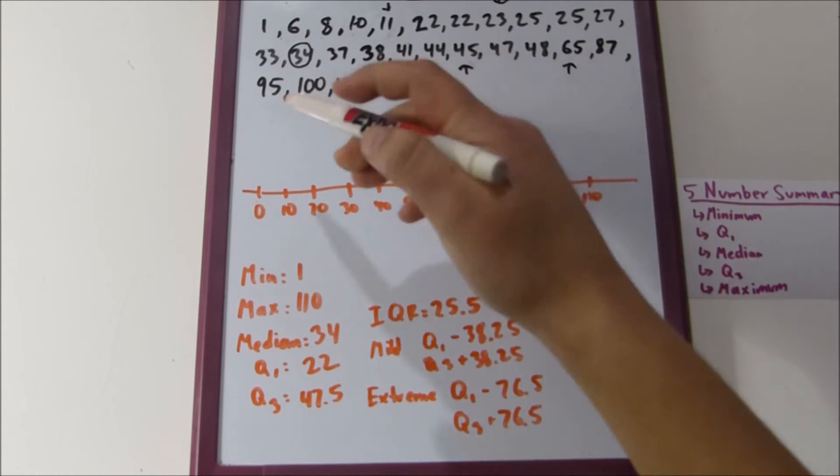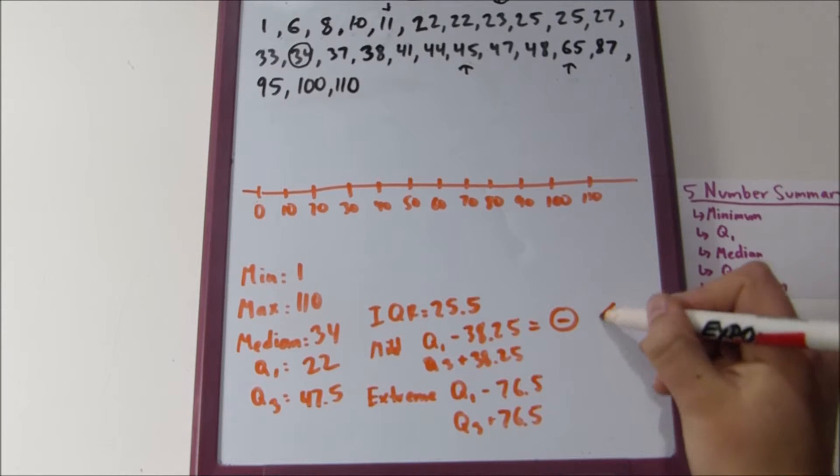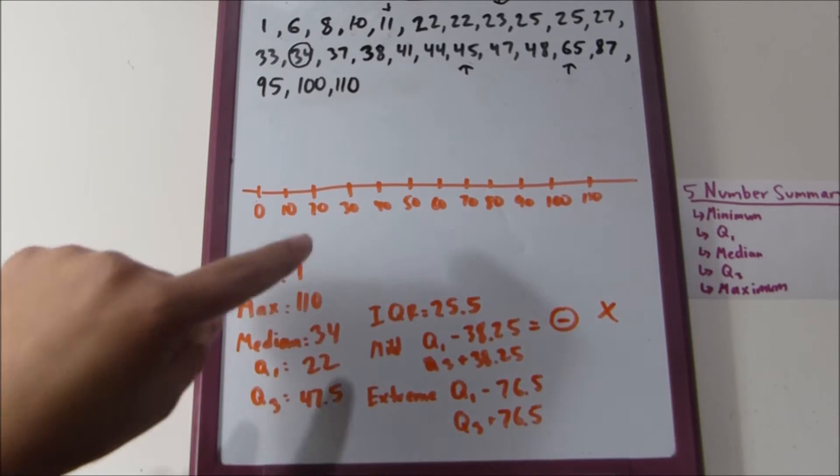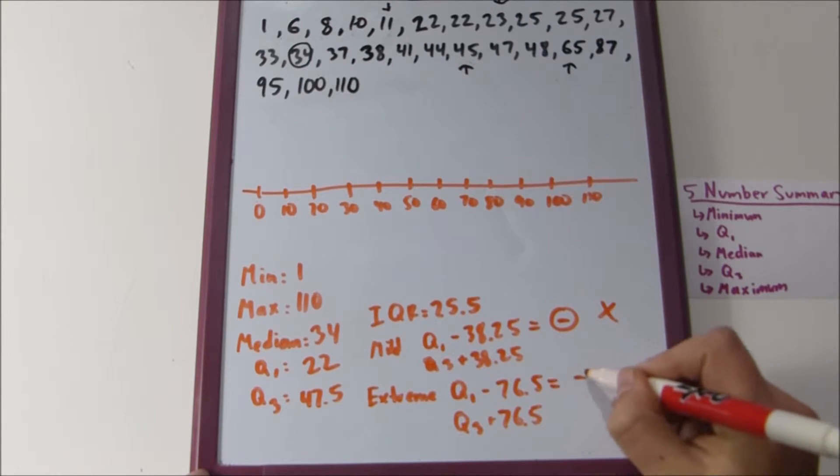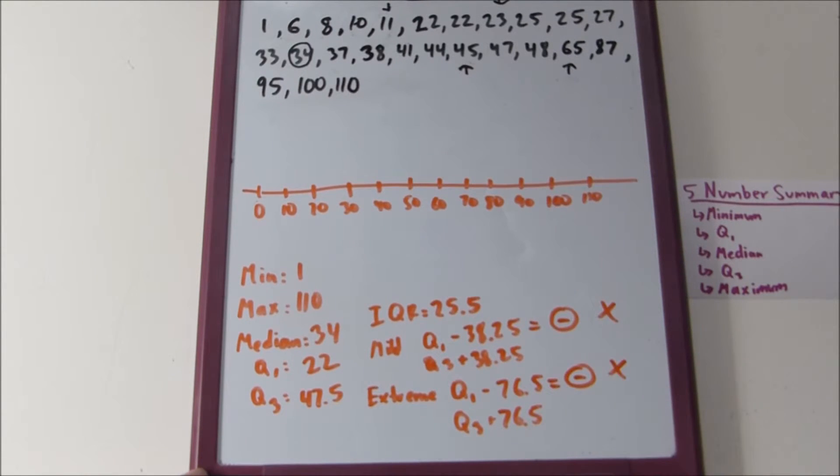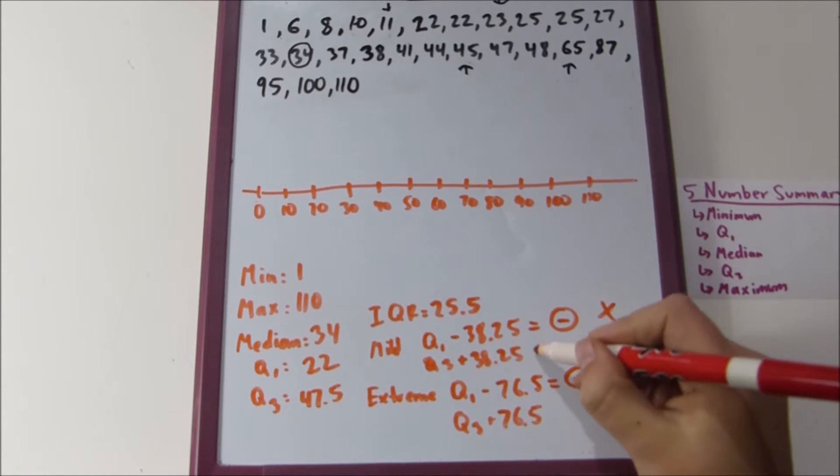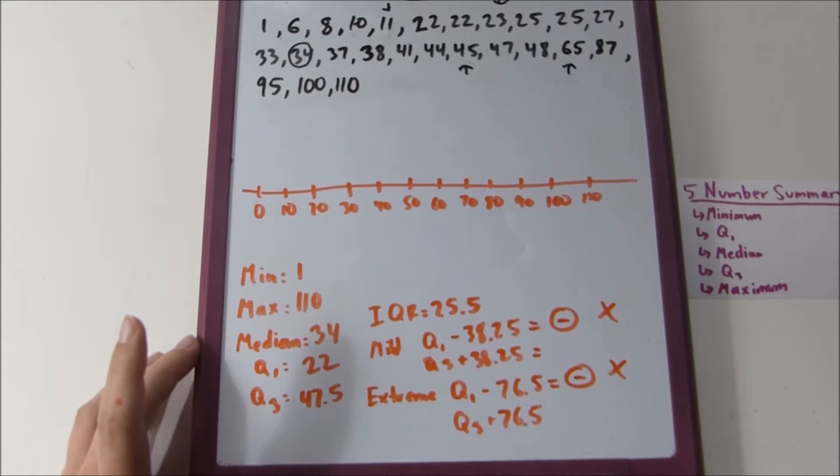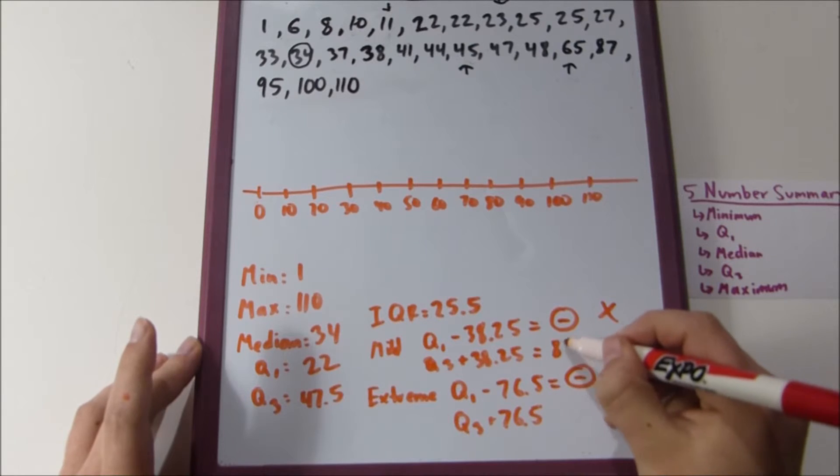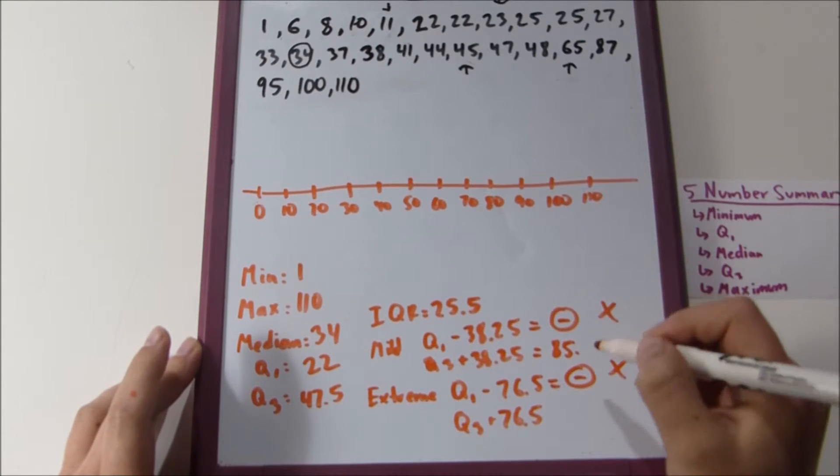So, now we can find the ranges. Twenty-two minus thirty-eight point two-five, you end up with a negative number. Since none of our numbers are negative, you know that you don't have any mild outliers on the left side. Using this logic, you can also assume that you don't have any extreme outliers on the other side, because this will also be a negative number.